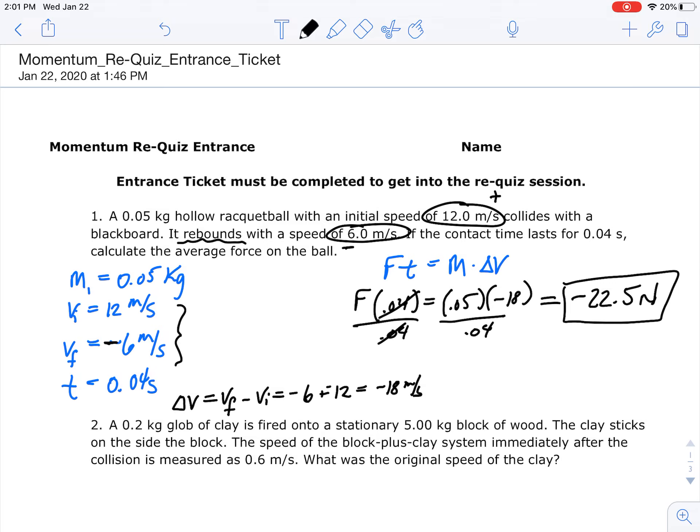You can see I've got the givens over to the left and the equation I'm going to use is ft equals m delta v. A couple things I want to point out. You need to find your change in velocity and remember that if you're going to the right that's positive and if you're going to the left that's negative. So when you do your change in velocity you're taking a negative 6 plus a negative 12. So you have to be careful there or you'll end up with the wrong value. You can see how I solved that here, set it up and solved for f.